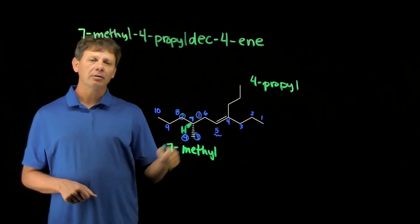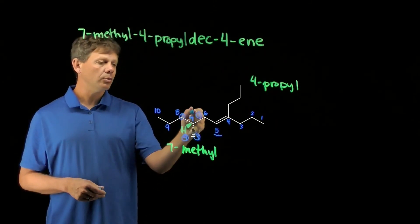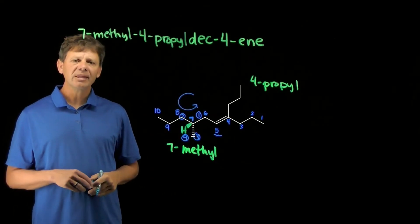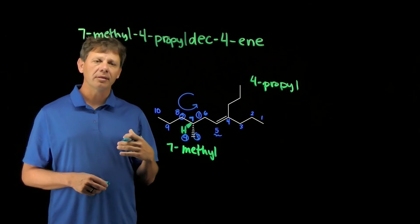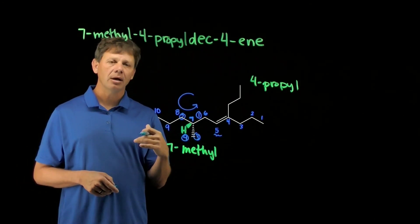In this case, our lowest priority substituent is coming forward. Our arrow counts from one to two to three in a counterclockwise direction. Counterclockwise with the lowest priority substituent coming towards you is going to be R.